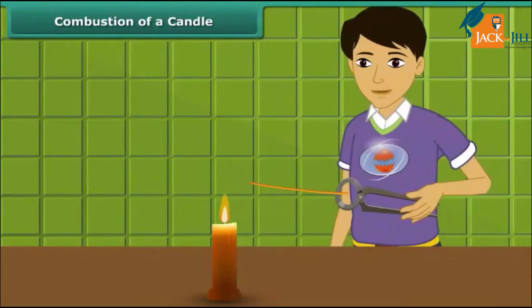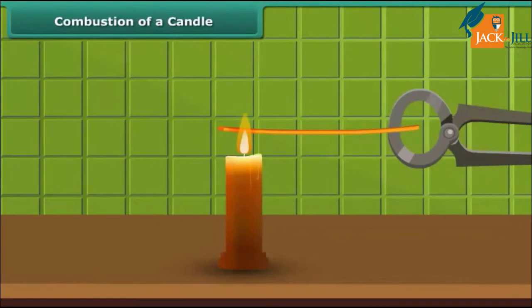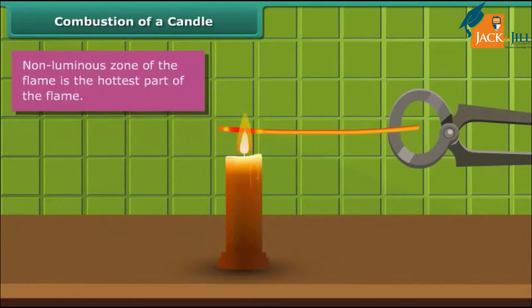Now observe another activity. Rohan is holding a thin long copper wire inside the flame with the help of a pair of tongs. The portion of the copper wire just outside the flame is getting red hot. This indicates that the non-luminous zone of the flame is the hottest part of the flame.